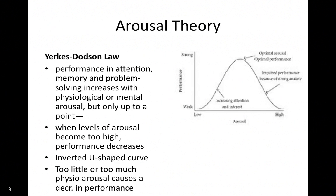Arousal theory involves what is known as the Yerkes-Dodson Law, and the idea is the inverted U-curve. Performance in attention, memory, and problem solving increases with a level of physiological or mental arousal, but only up to a point. When the levels of physiological arousal become too high, performance decreases. So if you've ever been too amped up for a test or an athletic competition, your over-arousal makes your performance decrease.